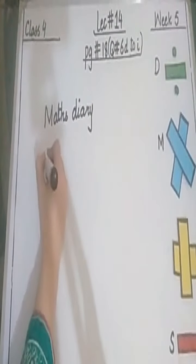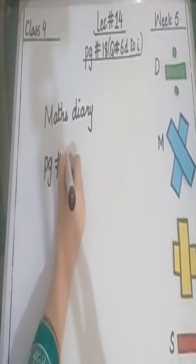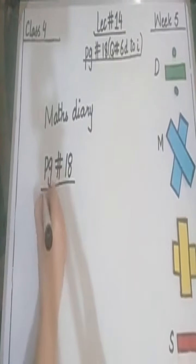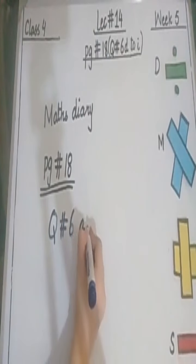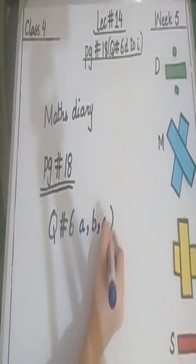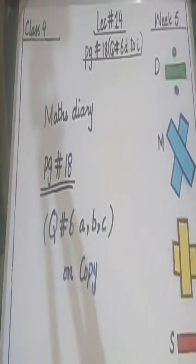Now class, I am writing your math diary for today. Math diary, which is page number 18, question number 6, parts A, B, and C, on your homework copies.